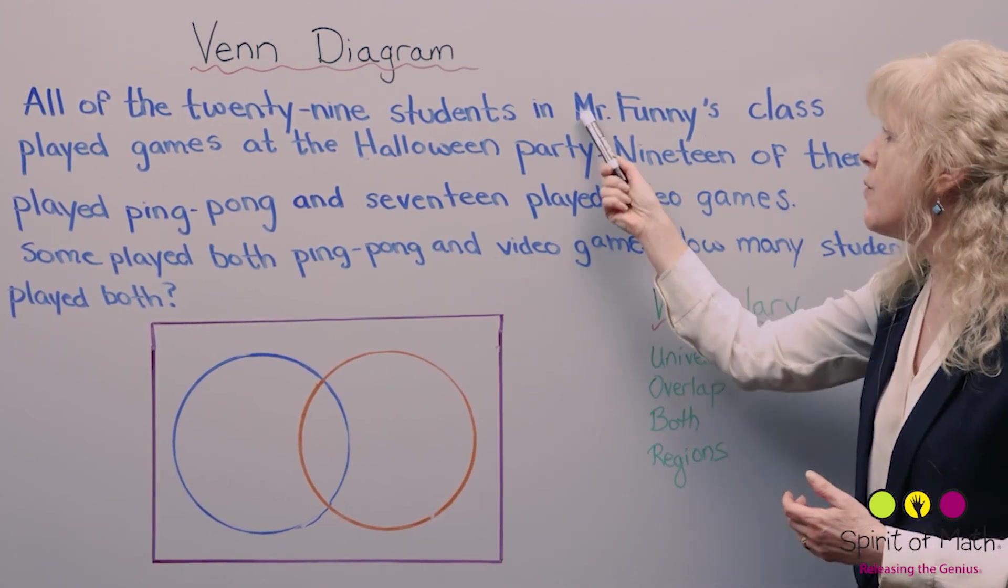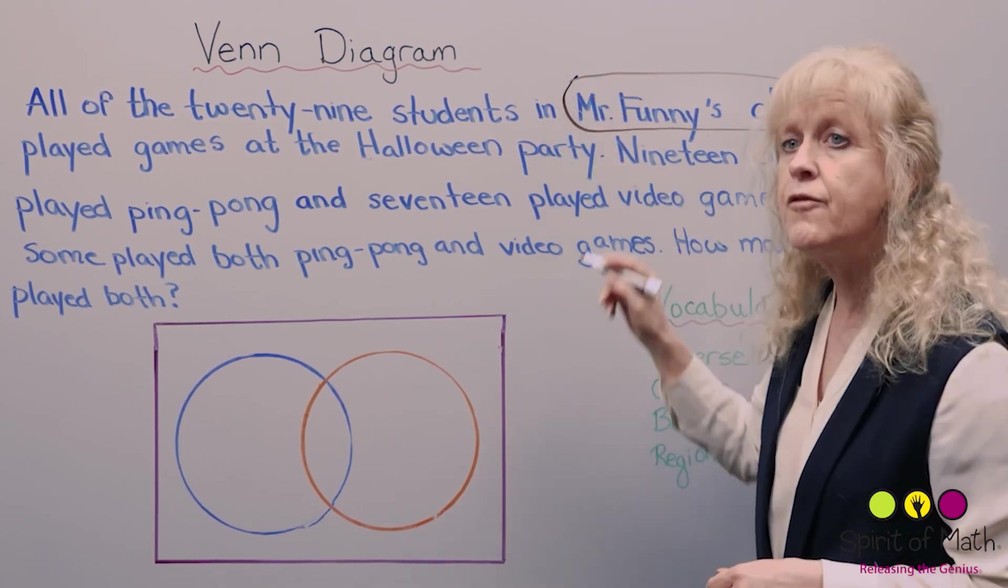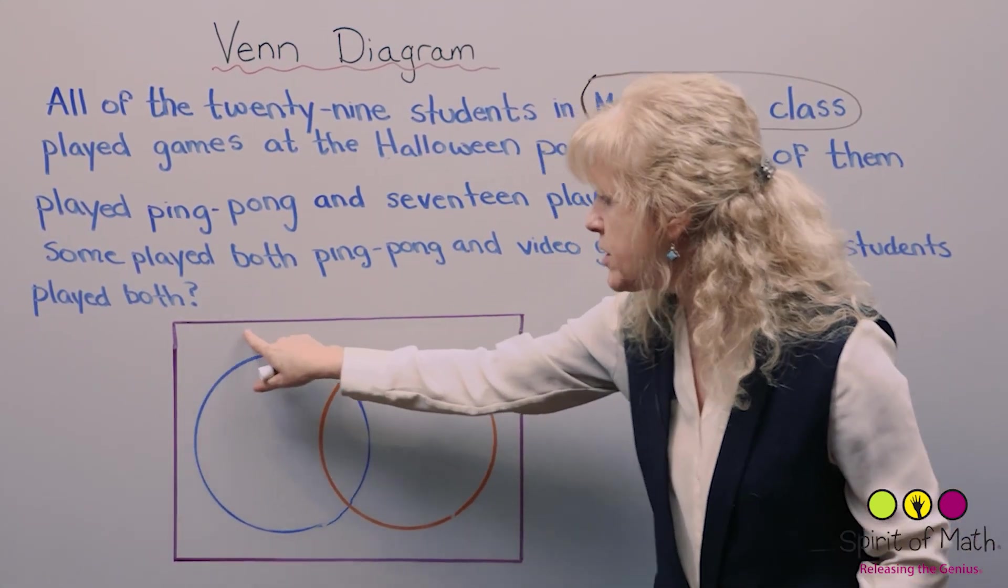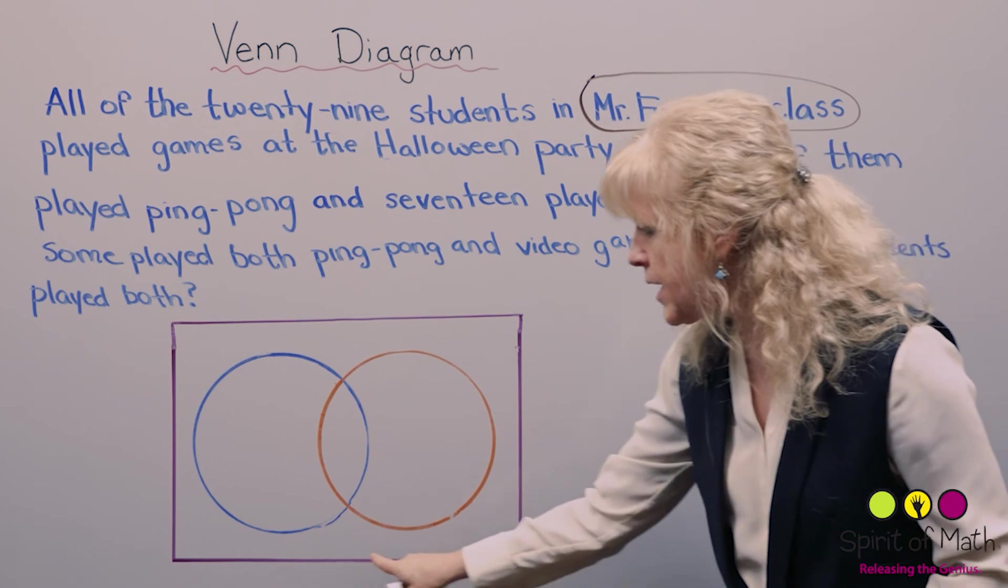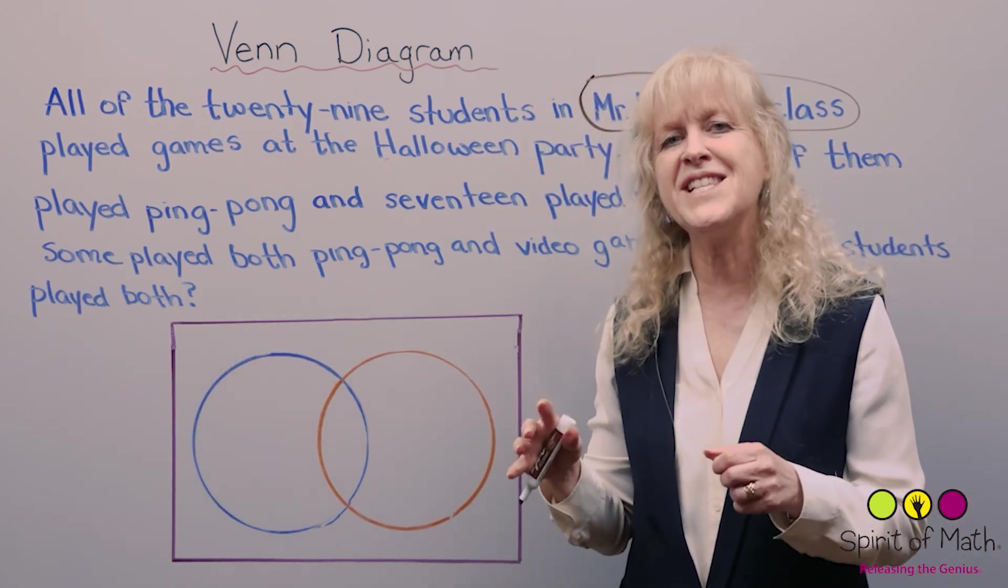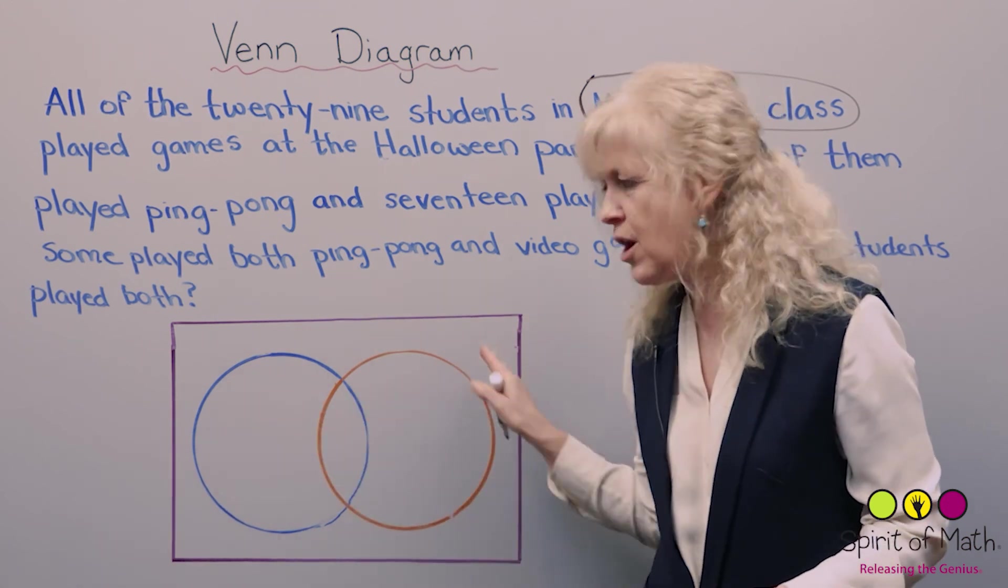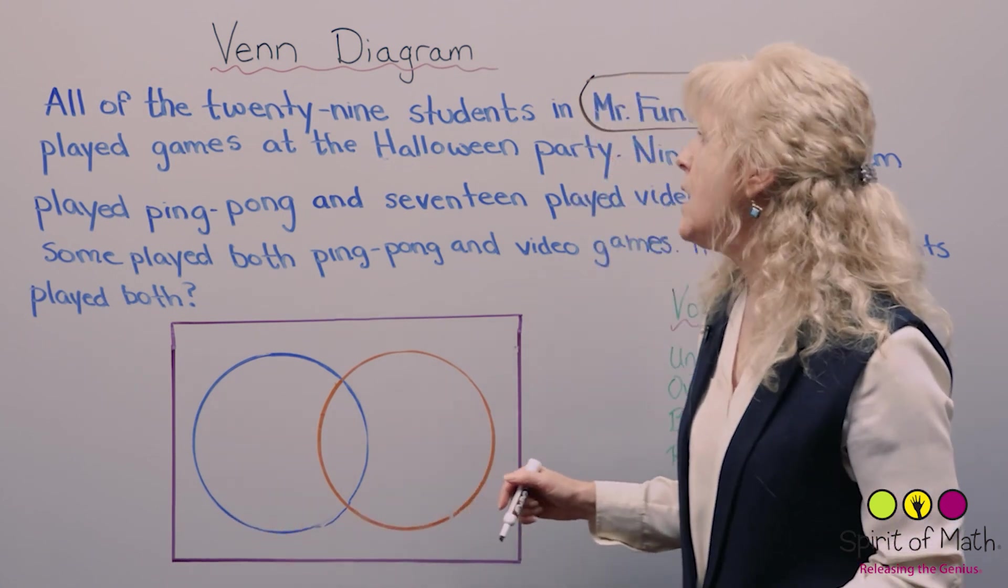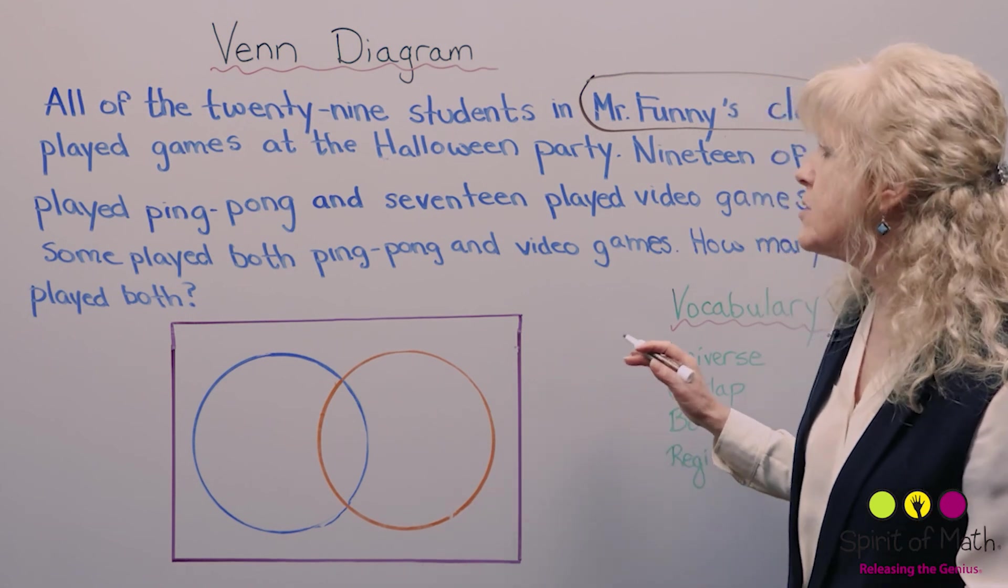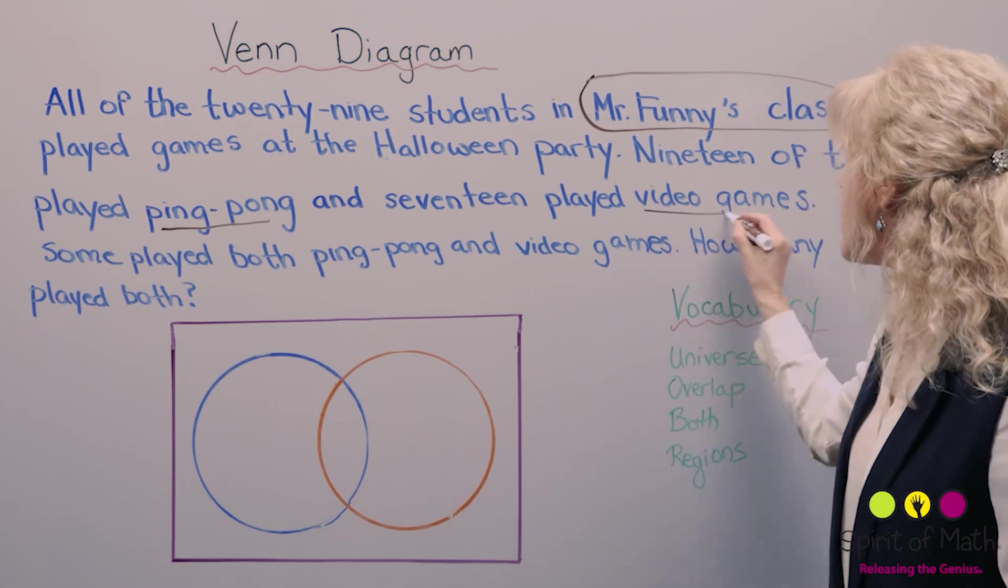Mr. Funny's class is what we would call the universe for this question. That's all that's included in this question. The universe is drawn in as a rectangle, and you do draw that. The kids have to understand this idea that this is the universe of this question. Then there's a couple of groupings. The first grouping is ping pong and the second is video games.